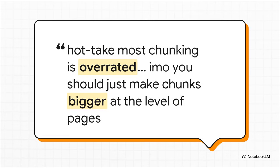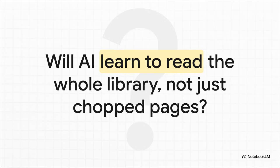Here's a fun twist. Some experts, like Jerry Liu, the CEO of Llama Index, are starting to ask if maybe we're overthinking this whole chunking thing. His hot take is that with new massive context windows in modern models, maybe we should just make our chunks way bigger — like entire pages — and just let the AI figure it out. And that leaves us with a really big fundamental question about the future: Is all this complex chunking work just a temporary fix, a patch for the limitations of today's models? Or is it a permanent, essential part of teaching an AI how to truly read and understand our world? It's a debate that's really shaping the foundations of the intelligent systems we're all building.